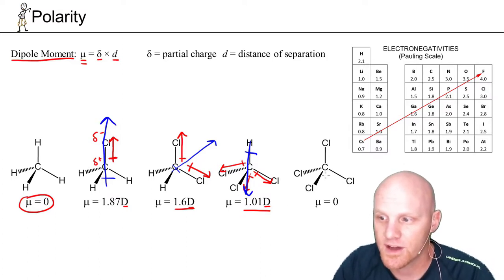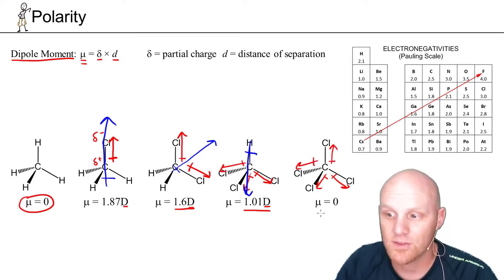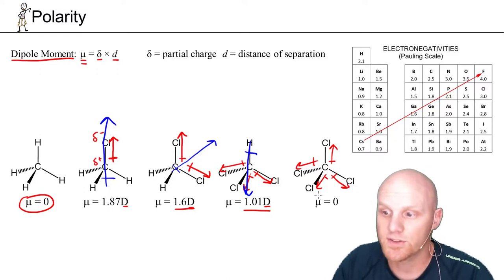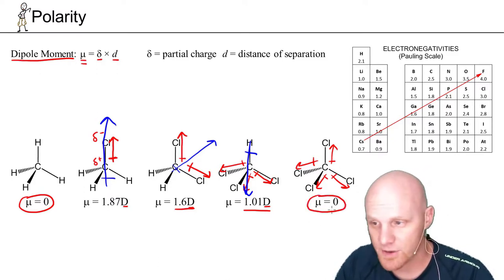And finally, when you go to carbon tetrachloride here, you've got four polar bonds. And when you take the vector sum in this case, all pointing 109.5 degrees apart, they all cancel. So the vector sum is zero, and so you end up with a nonpolar molecule with an overall dipole moment of zero.